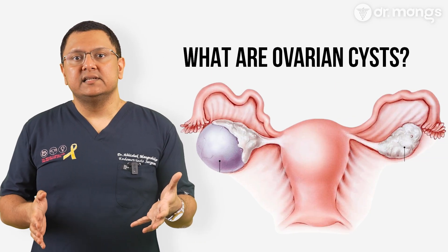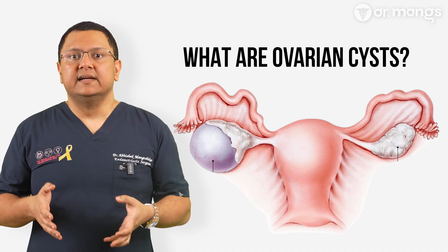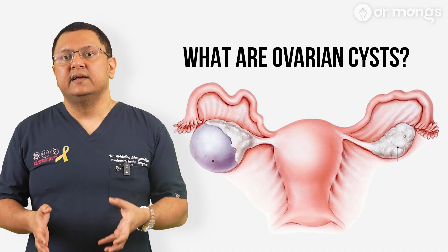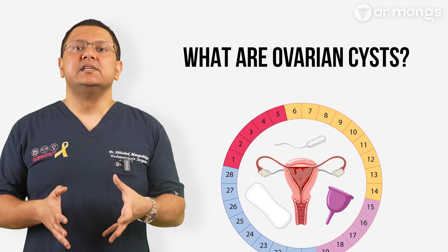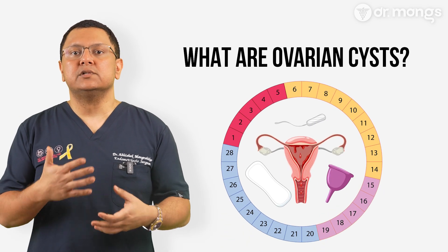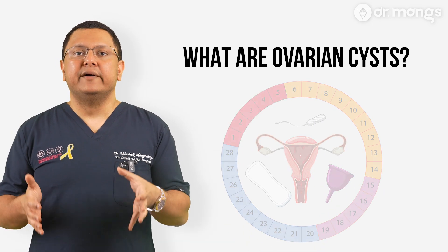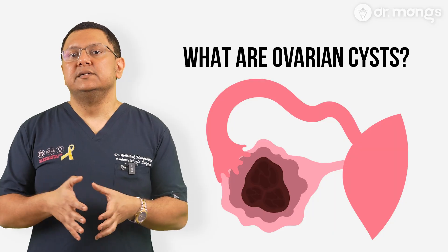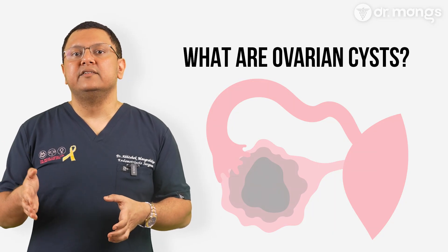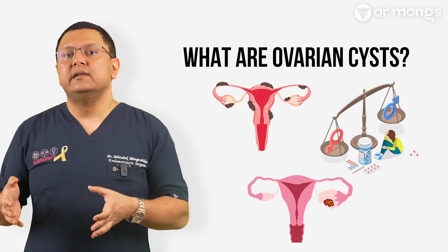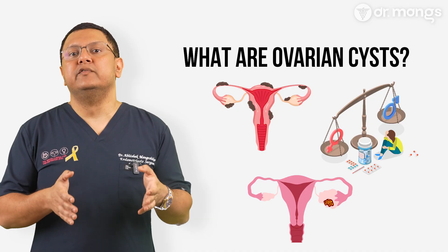Ovarian cysts are fluid-filled sacs that develop on the ovaries. They are extremely common and often go away on their own without causing symptoms. Most cysts form as part of the normal menstrual cycle and resolve naturally. However, some cysts can grow larger, persist, or indicate an underlying condition such as endometriosis, hormonal imbalances, or in rare cases, ovarian tumors.